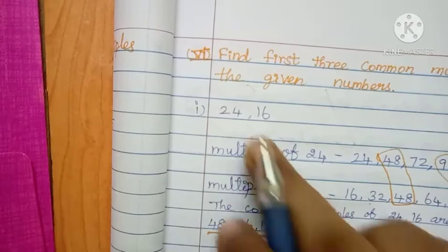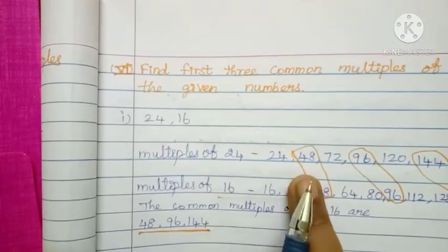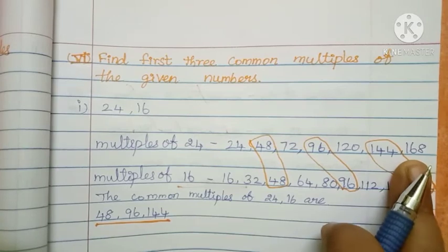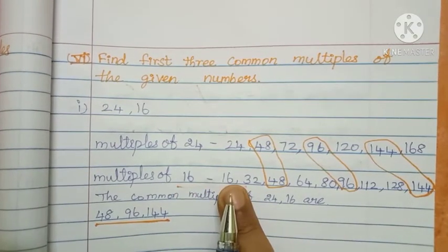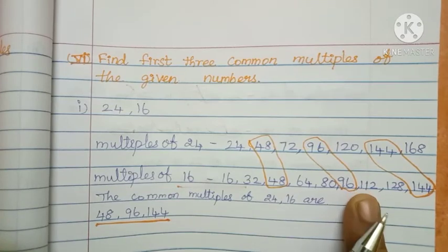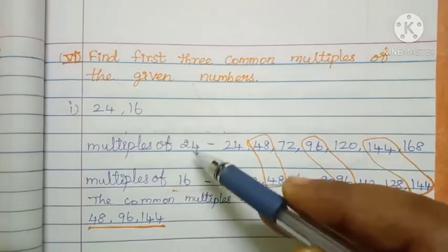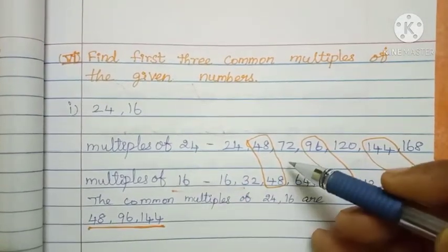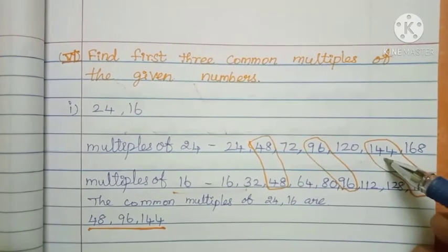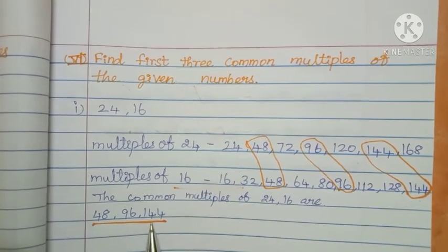This is row letter 6. Given 2 numbers, 24 and 16. Write up to 10 skip counts. 24: 24, 48, 72, 96, 120, 144, 168. Then 16 table also: 16, 32, 48, 64, 80, 96, 120, 128, 144. Easy to find out the 3 common multiples. Take the 24 table and 16 table and write. Find out the common numbers: 48, 96, 144 — these are the common multiples of 24 and 16.